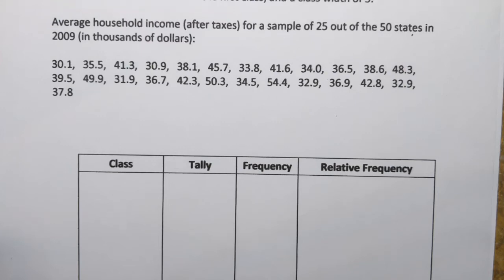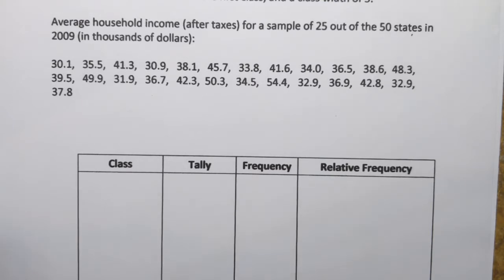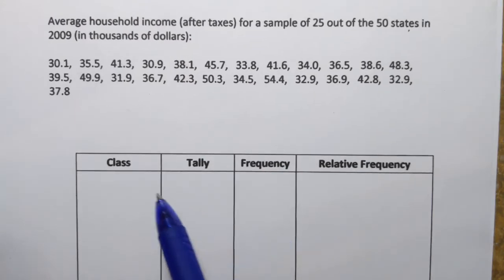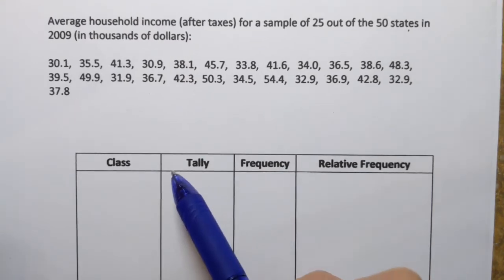Often data sets come in large sizes. So to use and analyze it, we first need to organize data. In this video, we're going to talk about one of the ways to organize quantitative data, and that is constructing frequency and relative frequency tables. We're actually going to combine these two tables into one. To see how it's done, we're going to use the following example.